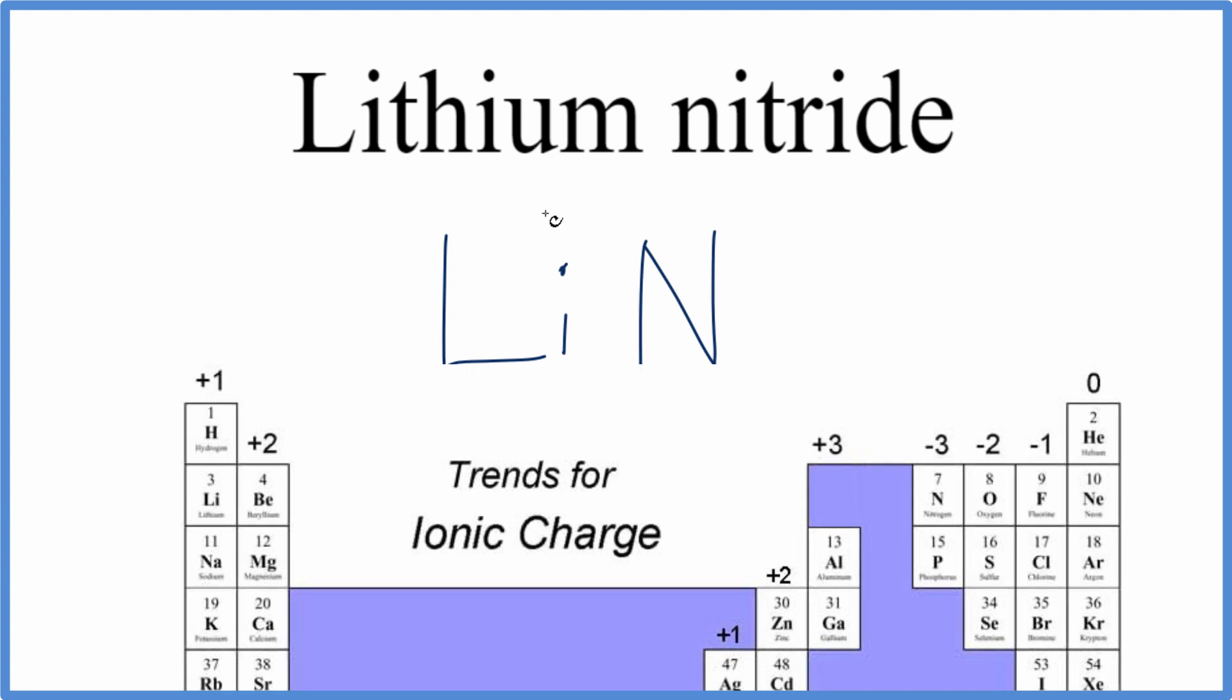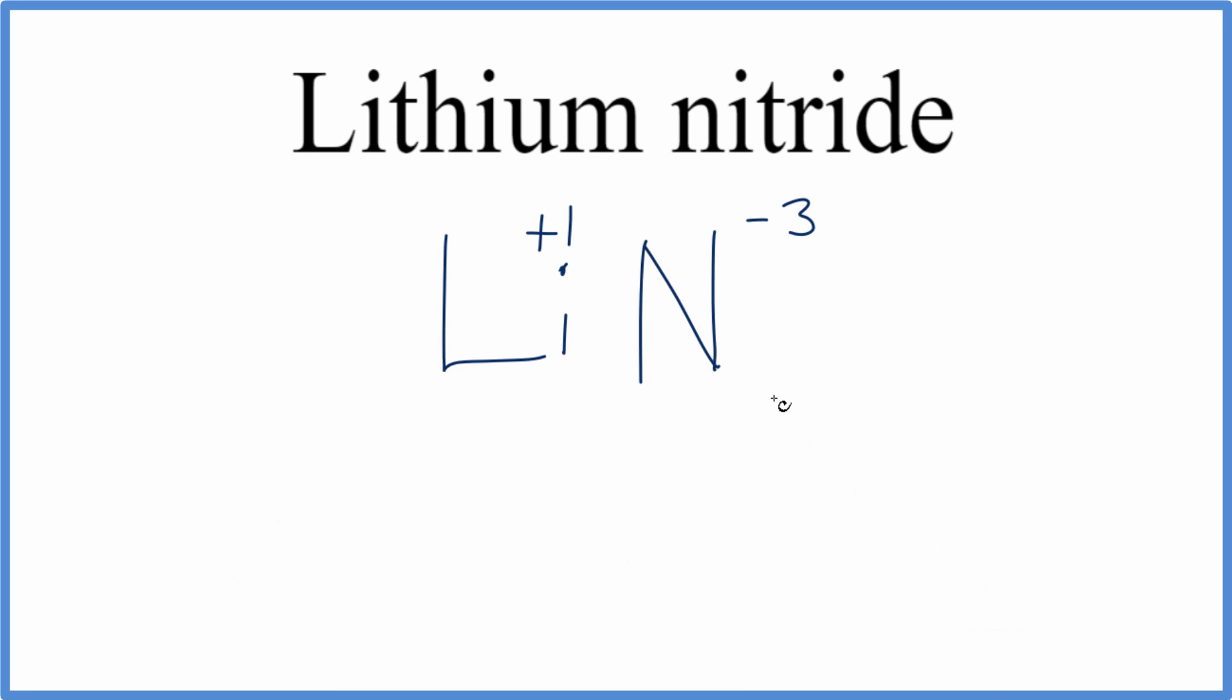So we can see that lithium, that's in group 1, that has our plus 1 charge, and the nitrogen, that has the minus 3. So these need to add up to be 0, and we can change the subscripts here to do that.